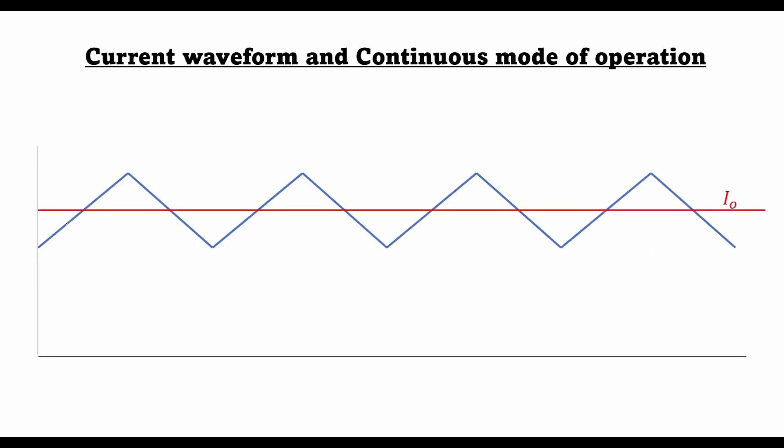If I combine these two curves, we can see that the output current waveform looks something like this. It has a ripple, let's call it delta I, and the average value of this ripple is the output current I0.